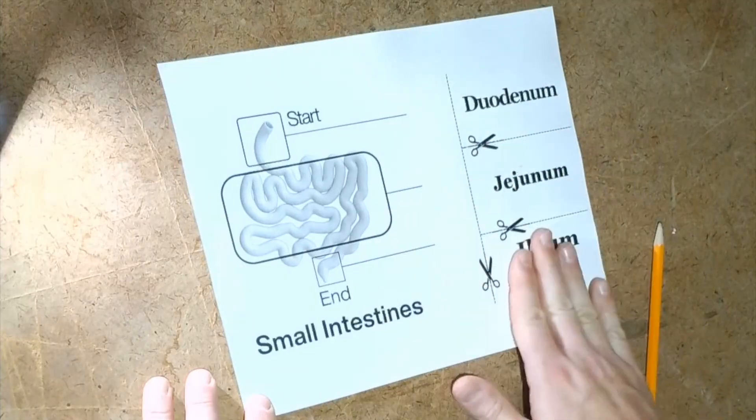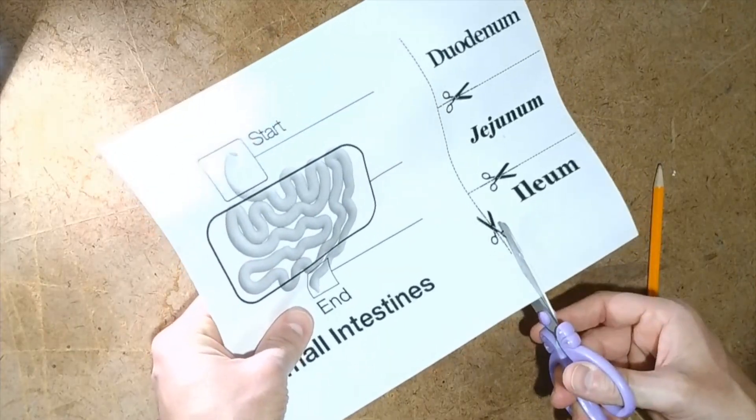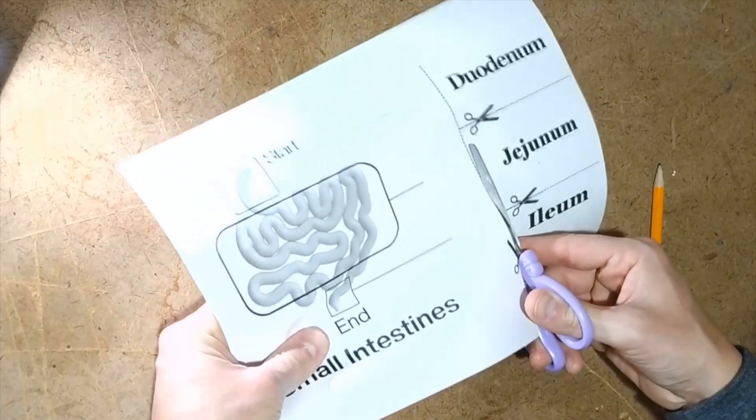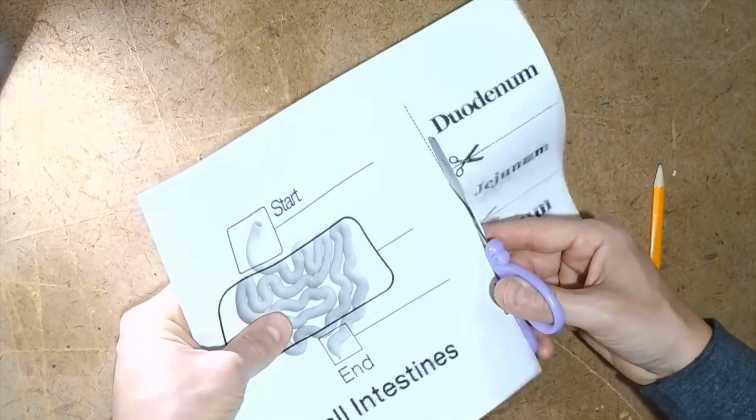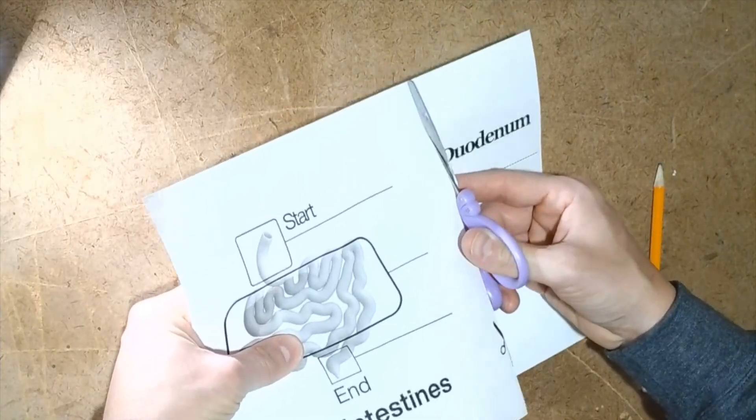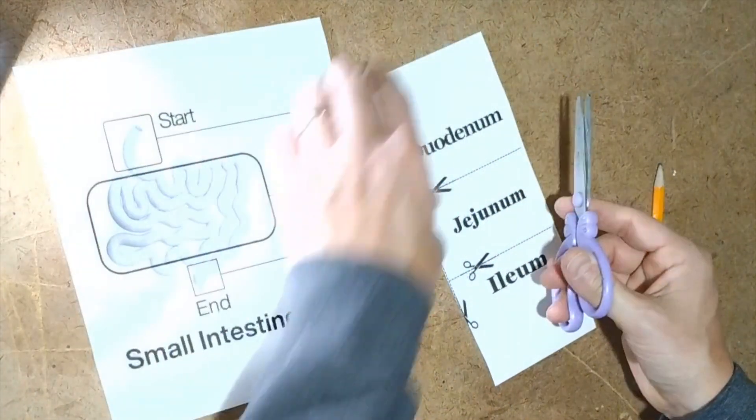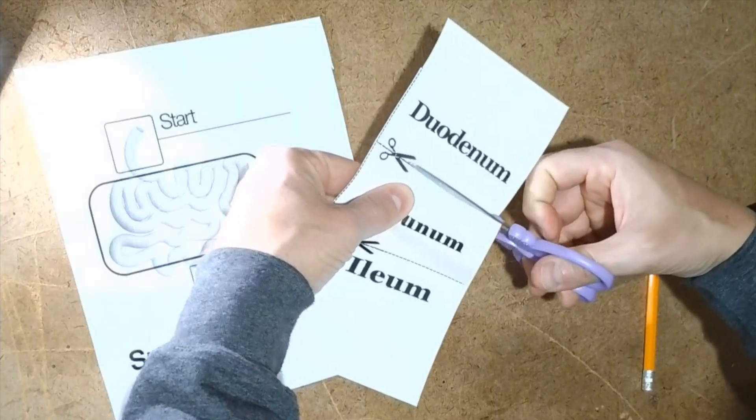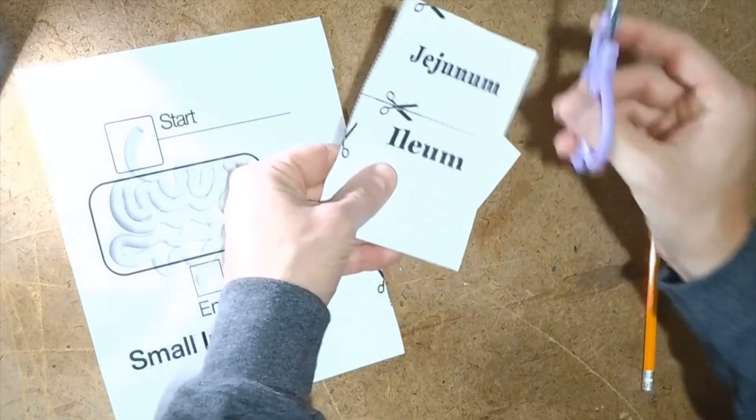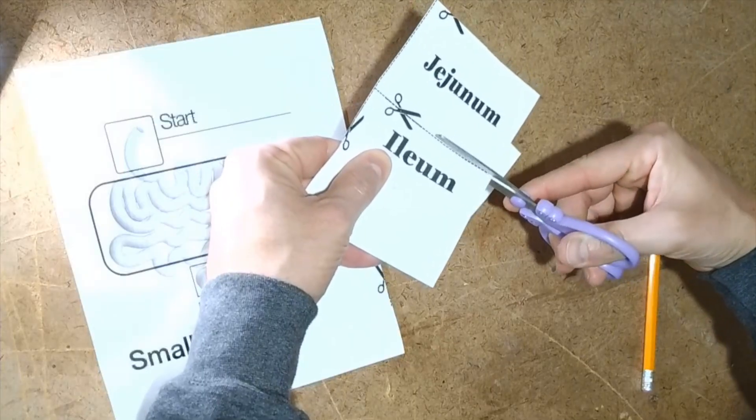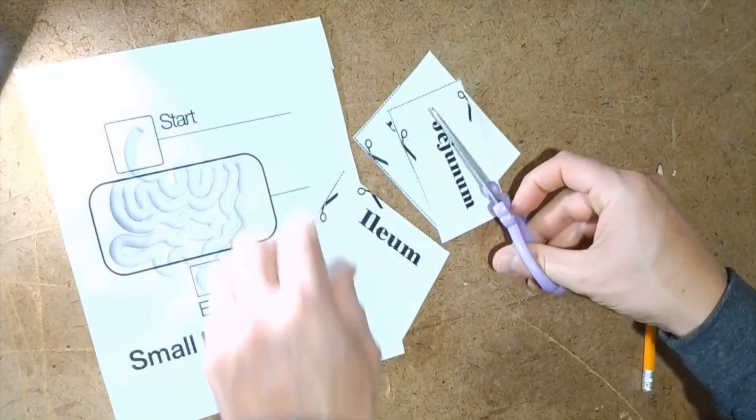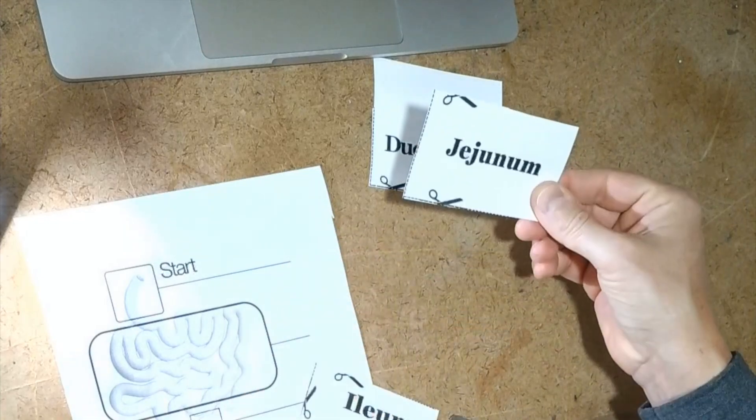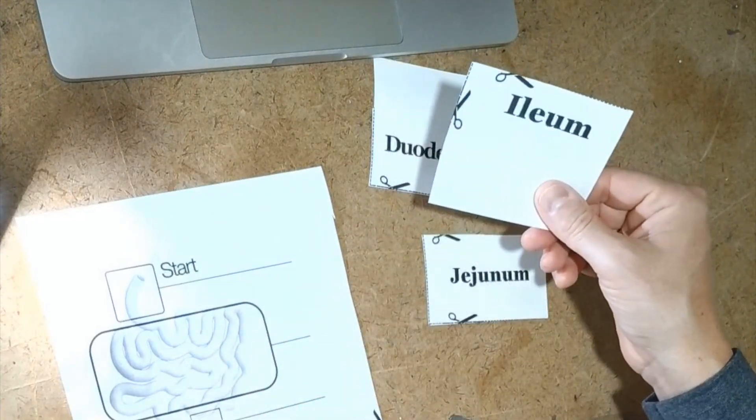Let's go ahead and cut this out so we can go ahead and do our worksheet. And we have our two sections of the small intestines. Duodenum, jejunum, and ileum.